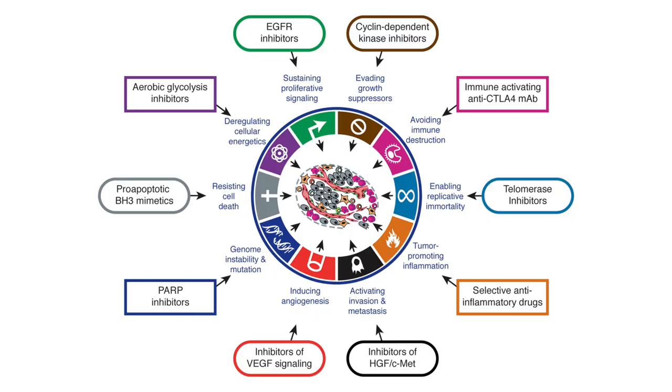The general consensus is that cancer takes a long time to develop because we need to acquire mutations that give rise to novel traits — these are the hallmarks of cancer. So let's talk through the hallmarks. I'll show you a diagram from the 2011 paper and walk through these key properties of cancer cells one by one, keeping it simple.